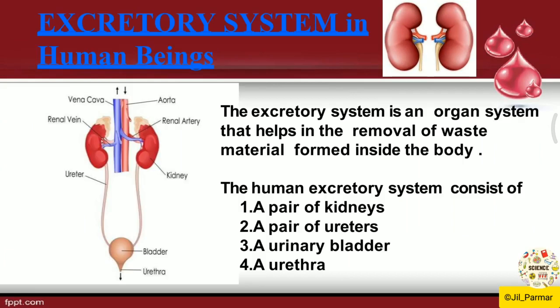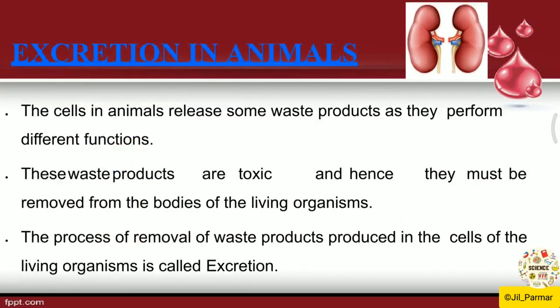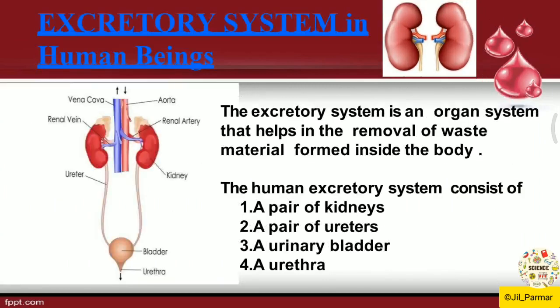Now what does the excretion system contain? The excretion system in human beings contains 4 things: one is a pair of kidneys, second is a pair of ureters, then the urinary bladder, and then the urethra. These are the 4 things present in the human excretion system.